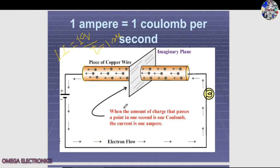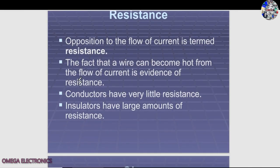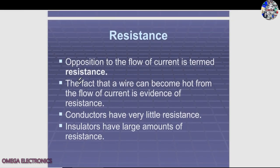When the amount of charge that passes a point in one second is one coulomb, that current is known as one ampere. In the figure, there is a flow of electrons opposing the direction of conventional current flow. Resistance opposes the flow of electrons or current. The fact that a wire can become hot from the flow of current is evidence of resistance.